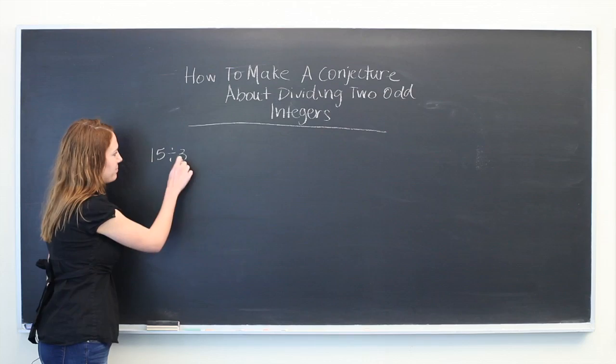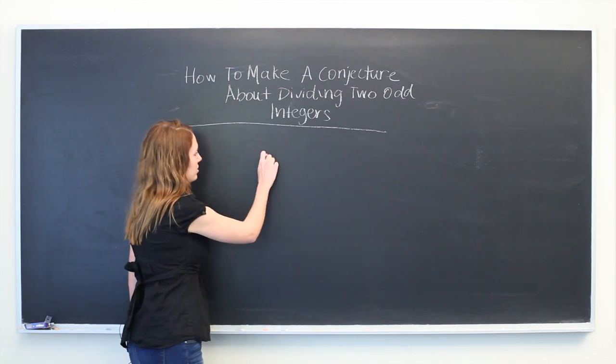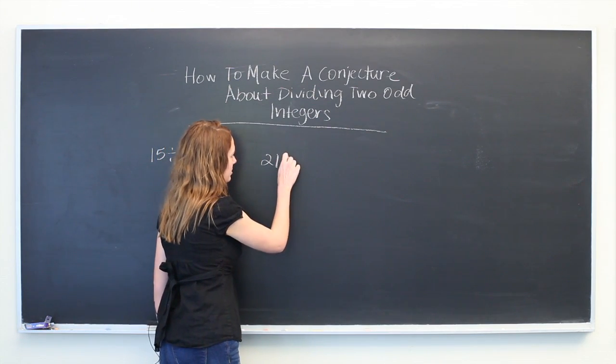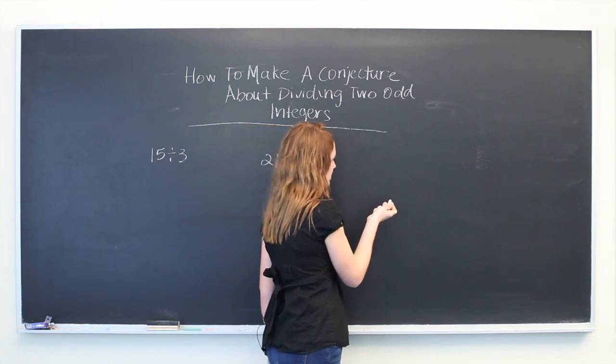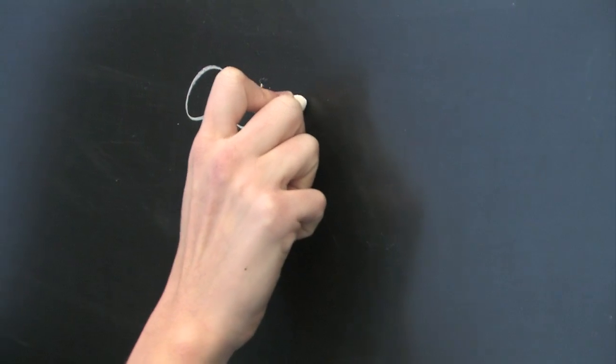So 15 divided by 3, 21 divided by 7, and we need one more. So let's say 9 divided by 3.